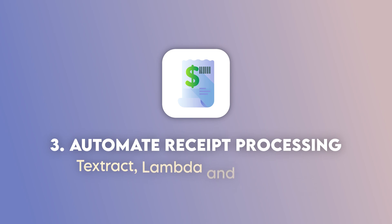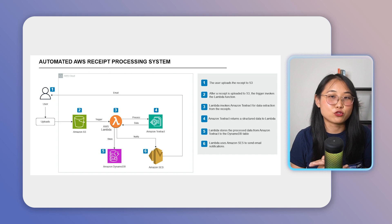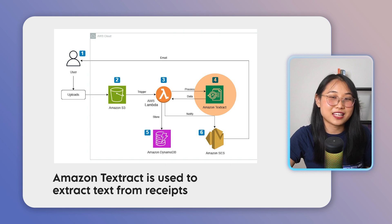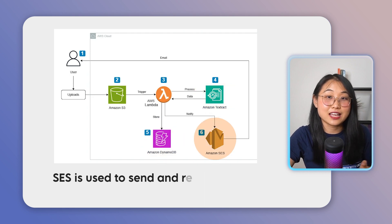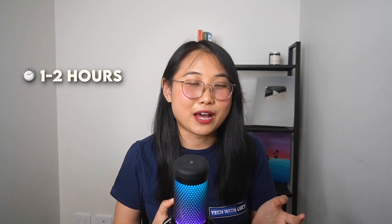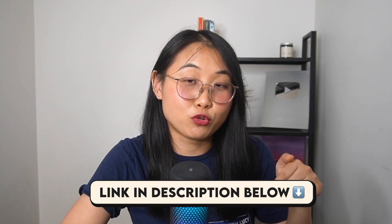If you want to build a project that can be useful for your day-to-day life, that's where project number three comes in. Project number three is to automate receipt processing with Textract, Lambda and DynamoDB. You'll be building a system that can help you keep track of all your paper as well as digital receipts. Amazon S3 is where you'll store and upload receipt files, Amazon Textract is used to extract text from receipts, DynamoDB is used to store the data, SES is used to send email summaries, and AWS Lambda powers the whole thing. The estimated time to complete this project is only about one to two hours and it's available for free within the free tier. If you're interested in a step-by-step demo, I've included the Build With Me video in the description below.